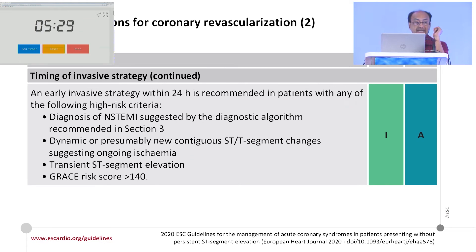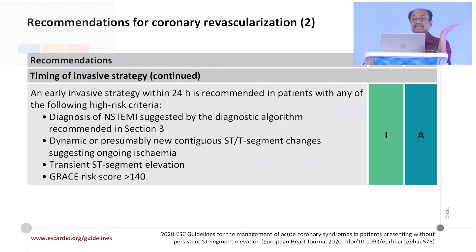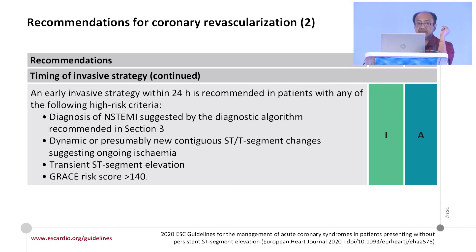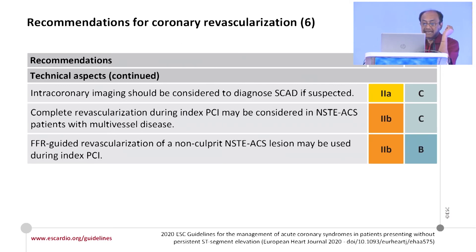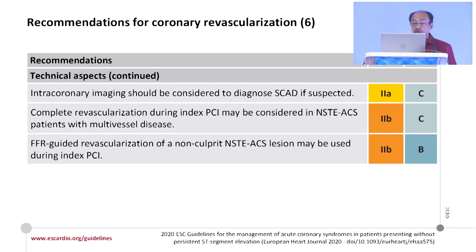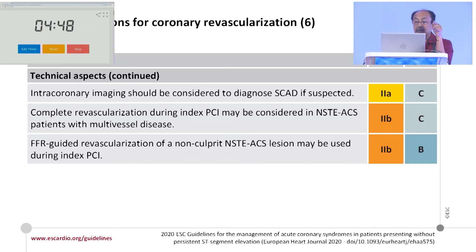The second group — who should undergo invasive PCI within 24 hours — includes patients where NSTEMI diagnosis is complete (biomarker positive), dynamic ST changes, transient ST elevation, and GRACE score above 140. Any GRACE score more than 140 identifies a high-risk population. Intracoronary imaging can also be considered. Complete revascularization during index PCI may be considered in NSTEMI with multi-vessel disease, but it is a Class IIB indication. FFR-guided revascularization is also a Class IIB indication.